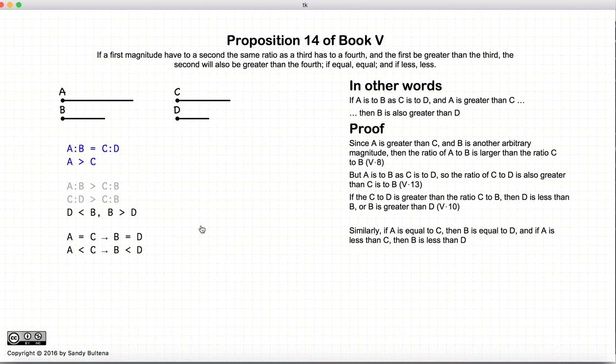And there we have shown this Proposition, a to b is equal to c to d gives you, if a is greater than c, b is greater than d; a is equal to c, b is equal to d; and finally, if a is less than c, b is less than d.